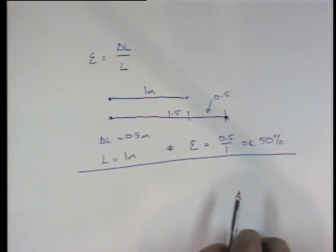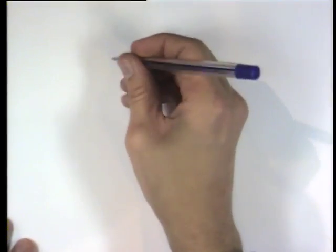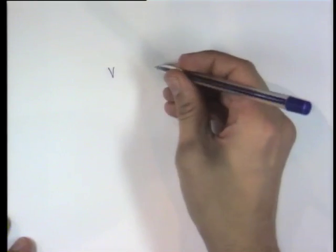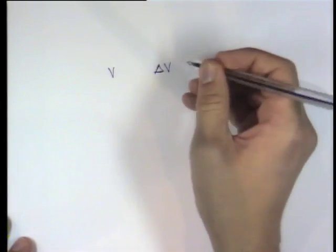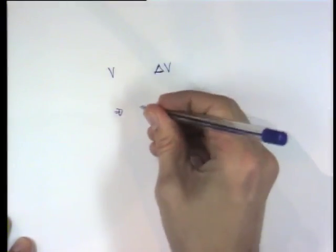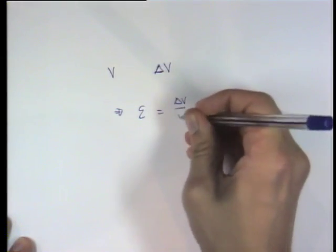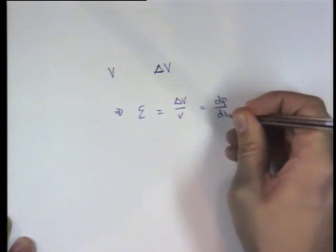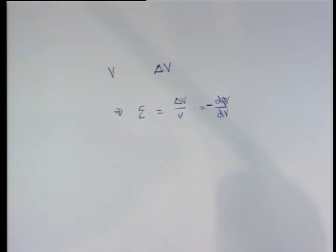Okay, so when we're looking at compressive volume strain, it's a little bit different. We take the original volume V and we compress it. That reduces the volume slightly by a value of about delta V. Now, because this is compressive, it's negative. Therefore, the strain, or the compressive volume strain, is equal to delta V over V, also written as dV/dV. And as I said, that must be negative as it's compressive.